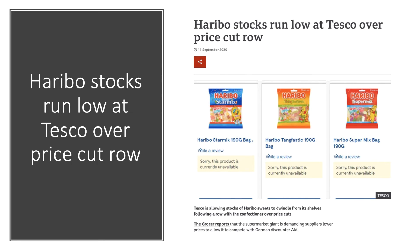Here's another monopsony story. It seems from this story that the deal Aldi has with Haribo — the iconic German sweet manufacturer — is better than the one Tesco has with Haribo. As a result, given Tesco's commitment to match Aldi on price, they want to renegotiate their deal. So Tesco is trying to exert monopsony power over the sweet manufacturer. These are two big businesses, so it's quite interesting to consider the balance of negotiating power in this decision, and whether or not Haribo feel the need to budge remains to be seen.